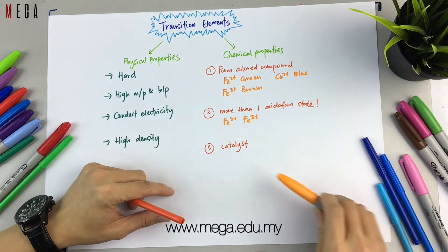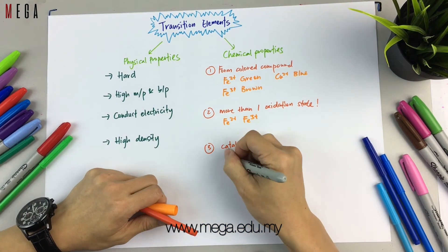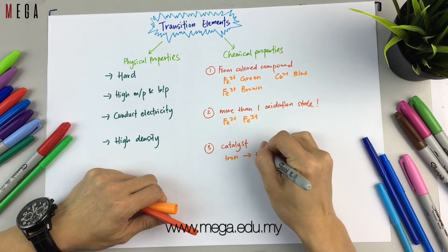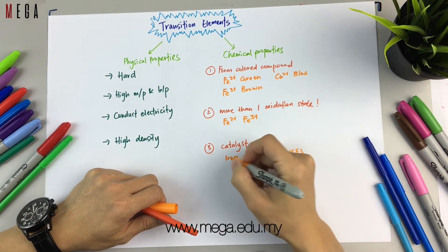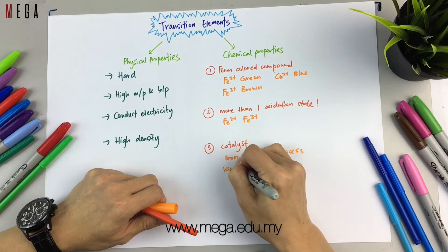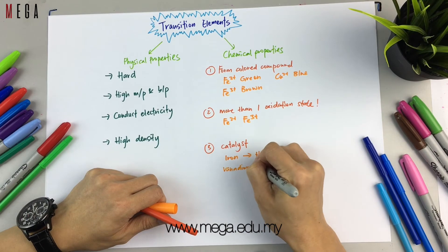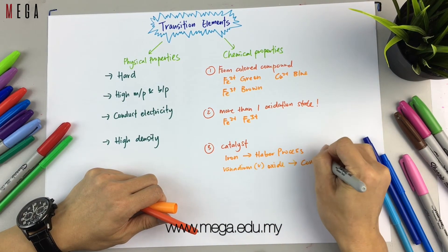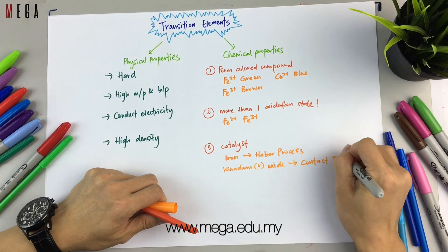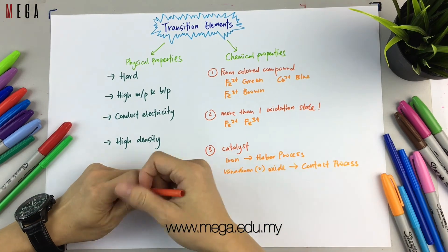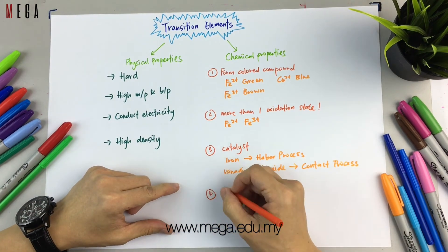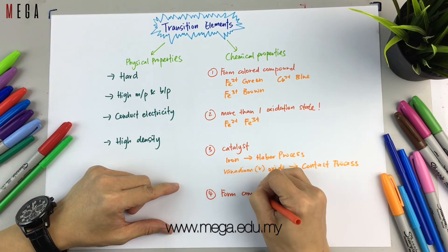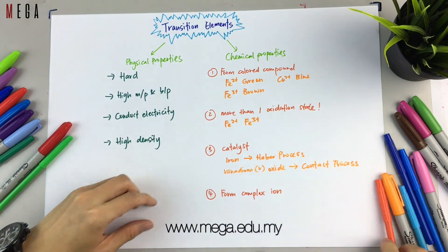Next, transition elements can be used as catalysts. Popular examples are iron in the Haber process to produce ammonia, and vanadium(V) oxide in the Contact process to produce sulfuric acid.